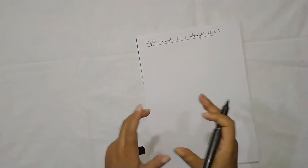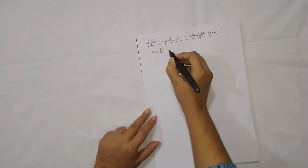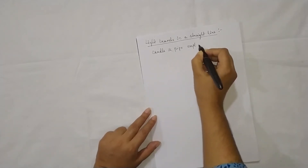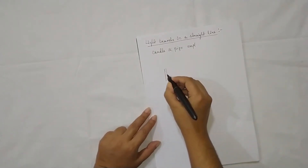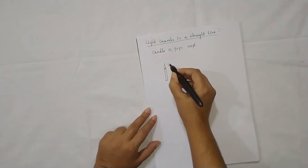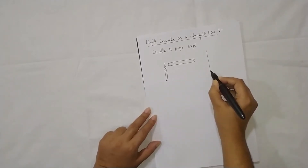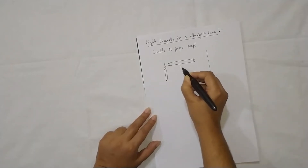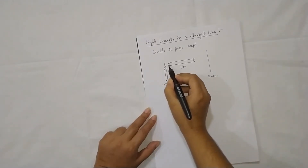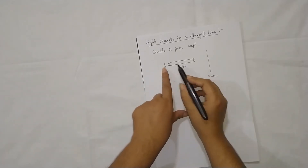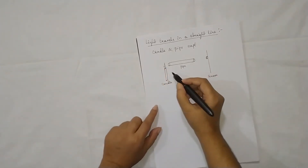To conclude how light travels in a straight line, we go for an experiment. The usual experiment that comes to mind is the candle and pipe experiment that is there in the book. We take a candle, light it up, then take a straight pipe, place a screen at the end, and put the pipe in front of the flame — you can see an image of light on the screen.